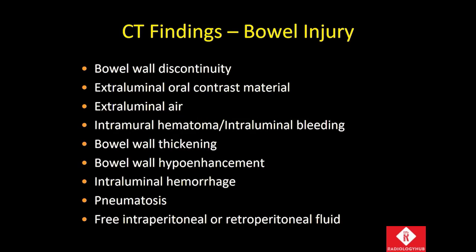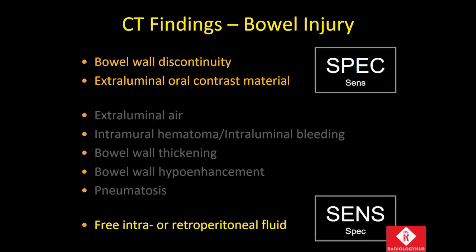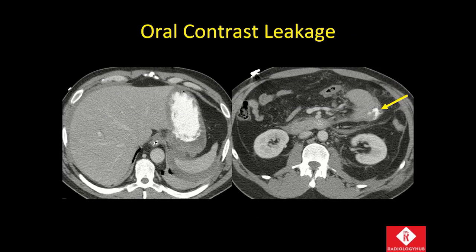On CT, all the findings described in the literature vary in specificity. Some are very specific — the finding of either discontinuity in the wall or extraluminal oral contrast will mean that the patient almost certainly has a bowel injury. The most sensitive sign is the presence of free intra- or retroperitoneal fluid, but it's also the least specific. Even though the vast majority of patients with bowel injuries will have free fluid, most patients with free fluid do not have a bowel injury. The signs in the middle, when found in combination, are the most useful for making this important but difficult diagnosis.